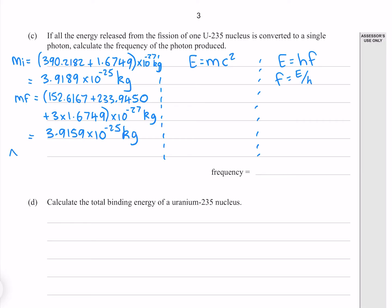Now to find our change in mass, we just need to find the difference between our initial and final masses. Which gives me 3 times 10 to the minus 28 kilograms.